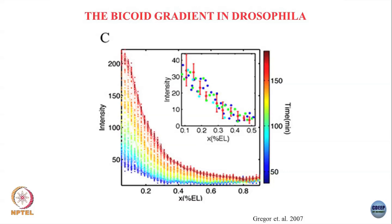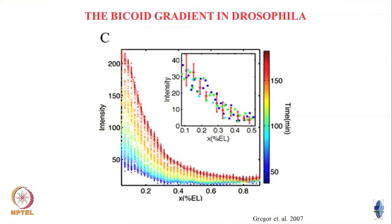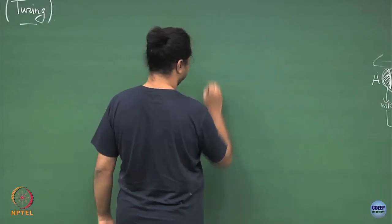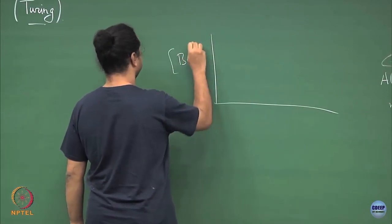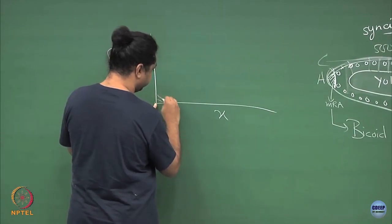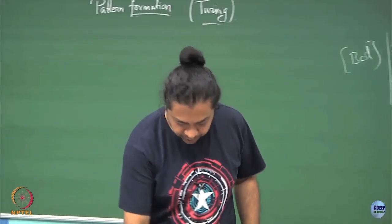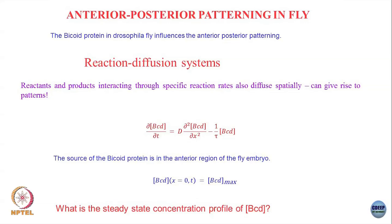Drosophila embryos are roughly around 500-600 microns, so 0.2 means 0.2 of 500 microns. This is the Bicoid intensity plotted at different time points. At very early times it is the blue line, then as time goes on it rises — at very late time, around two and a half hours, you get this red line. So you form a concentration gradient — initially there is nothing, then as the mRNA gets transcribed and the protein produced, the protein diffuses slowly and covers the whole cell, ultimately giving a profile that looks like an exponential decay.